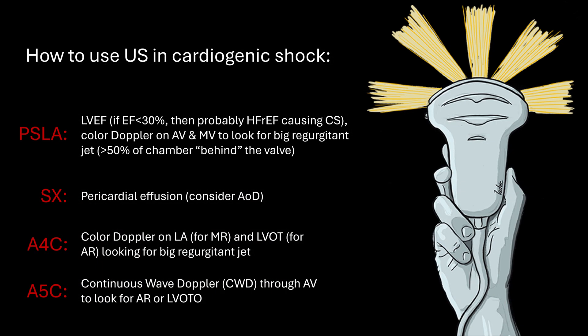This is how I use POCUS in cardiogenic shock. I start in the parasternal long axis view and look at ejection fraction. If EF is less than 30%, they probably have HFrEF causing cardiogenic shock. I'll also put color Doppler on the aortic and mitral valves to look for a big regurgitant jet — remember, greater than 50% of the chamber behind the valve with a wide vena contracta is hemodynamically significant. Then I move to the subcostal view to look for a pericardial effusion, which would make me consider an aortic dissection. Then I move to apical 4-chamber with color Doppler on the left atrium and LVOT, and finally to apical 5-chamber with continuous wave Doppler through the aortic valve to look for aortic regurgitation or LVOT obstruction.